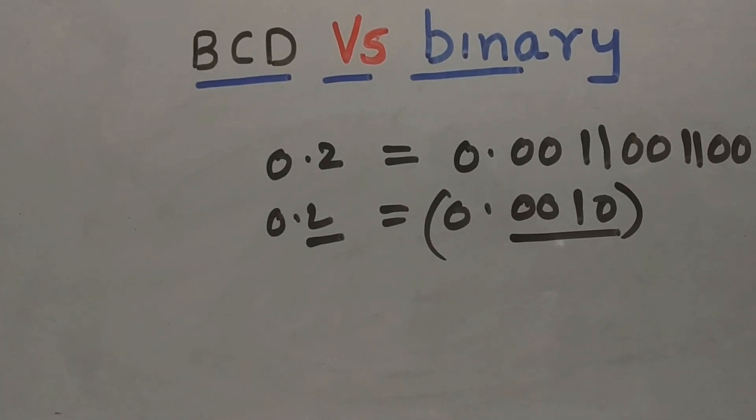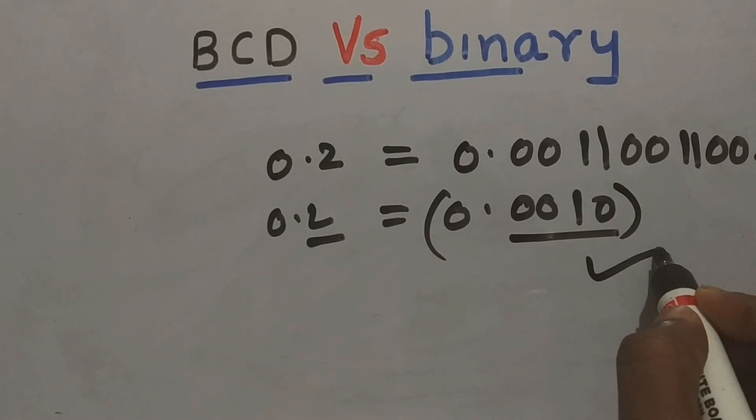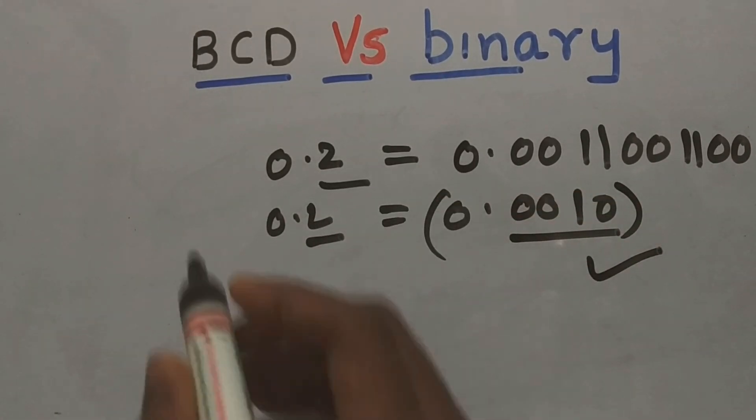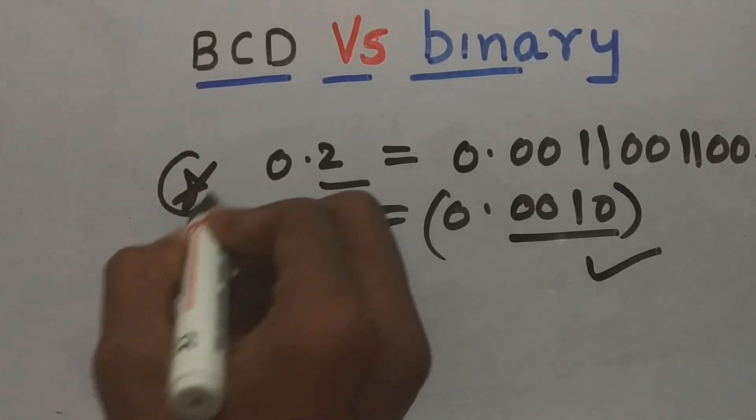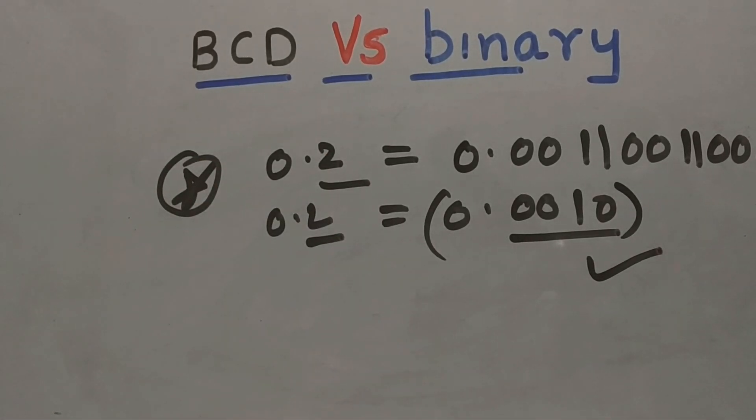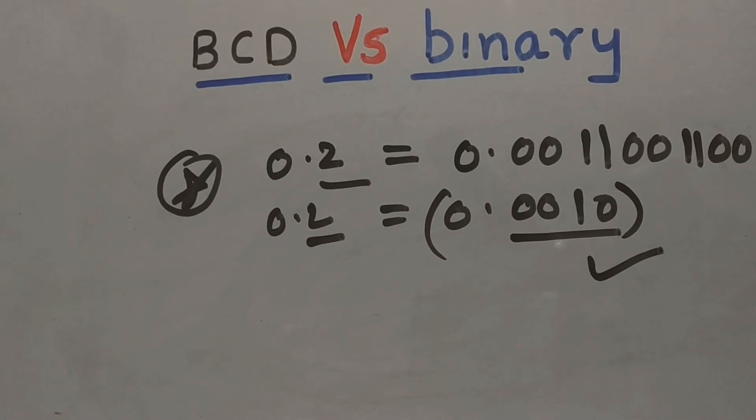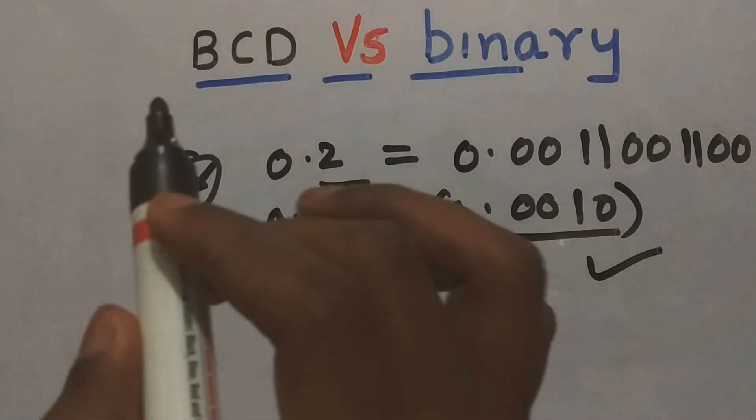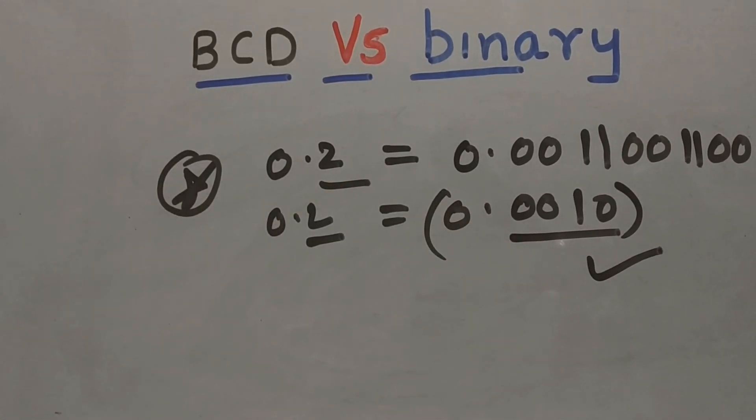In BCD, there is easier rounding off compared to binary. This is one more important advantage of BCD compared to binary. So I hope you understood the differences between binary versus BCD. Never forget BCD is not a number system like binary. BCD is just used to represent a decimal number so that it can be easily for conversion, especially for the hardware.